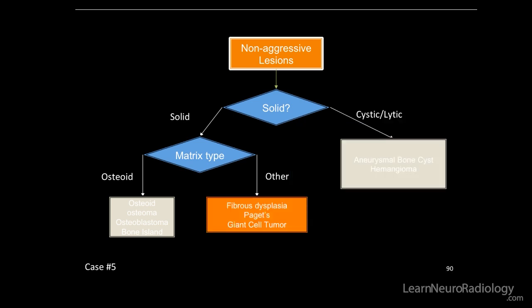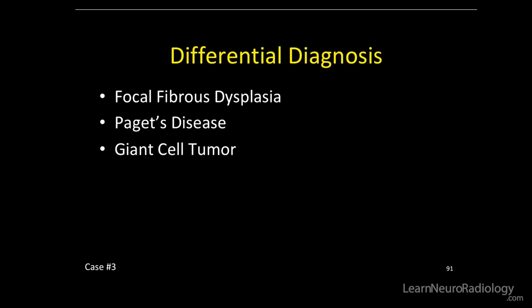So here's our differential: fibrous dysplasia, Paget's, giant cell tumor. I probably wouldn't show you a giant cell tumor twice in a row — that'd be mean. Let's narrow it down.